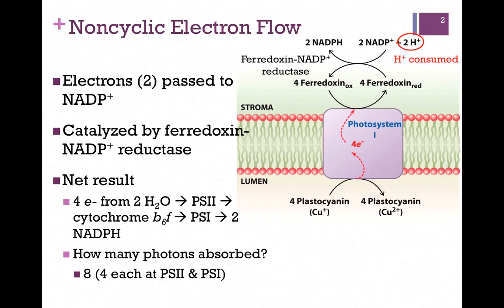At Photosystem 1, a similar series of photooxidation events gave us four electrons and we passed those to a one-electron carrier, ferridoxin. Four electrons, four ferridoxin molecules.